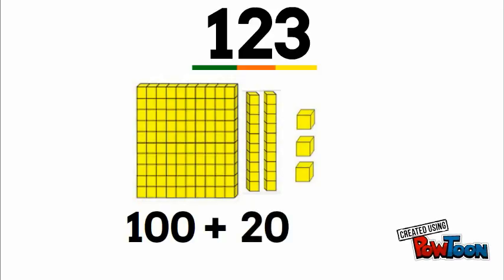So we have one flat, so that's one hundred. We have two rods or two tens, so we're gonna say plus twenty. And then we have three ones, so we're gonna finish it by saying plus three. So 100 plus 20 plus 3.